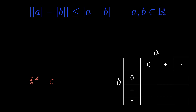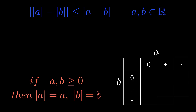First let's consider a and b simply greater or equal to zero. Now in this case, if that's true, then the absolute values of a and b are just simply a and b themselves. This would prove four out of the nine possibilities that a and b can take on.